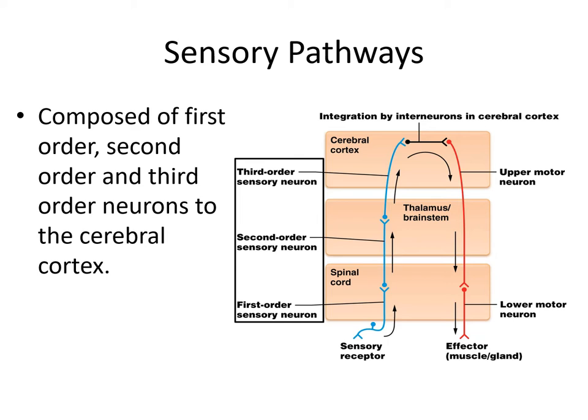We have a first order neuron, a second order neuron, and finally a third order neuron. Notice where the cell bodies are. The cell body of the first order neuron is in the periphery. The cell body of the second order neuron is in the spinal cord. And the cell body of the third order neuron is in the thalamus or brainstem.